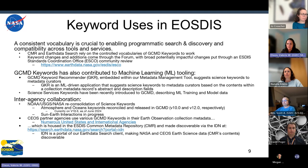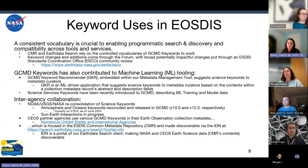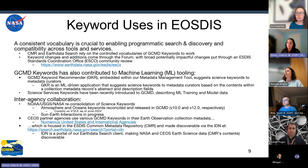Our partner agencies in CEOS use a lot of GCMD keywords in their Earth observation collection metadata, which is housed in our Common Metadata Repository and made discoverable via the IDN. The IDN is now a search portal of our Earth Data Search client, making all NASA and CEOS data partner metadata or collection records discoverable — pretty much all the contents of CMR.